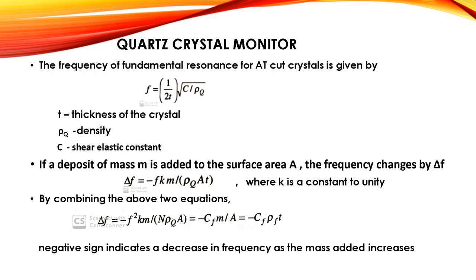If a deposit of mass m is added to the surface area A, the frequency changes by delta f, where delta f = −f × k × m / (rho_q × A × t), with k a constant equal to unity. By combining the equations, we can write: −f² × k × m / (n × rho_q × A) = −C_f × m/A = −C_f × rho_f × t. The negative sign indicates a decrease in frequency as the mass added increases.